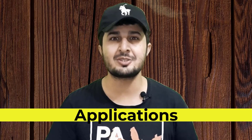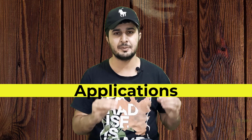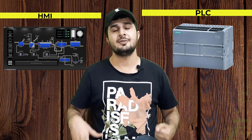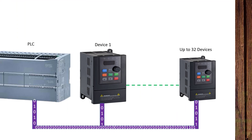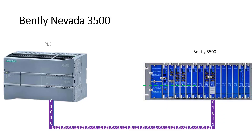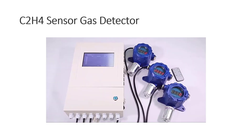Let's look at industrial applications of RS-485. In some PLC-to-HMI communication setups, RS-485 is used. PLC-to-VFD communication also sometimes uses RS-485. In Bentley systems used for vibration monitoring, you may also find RS-485. Another example is the C2H4 sensor gas analyzer, which also uses RS-485 for its communication.